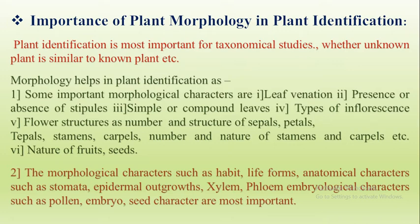The morphological characters such as habit — whether it is herb, shrub, under-tree, or tree — and life forms. Anatomical characters such as stomata type, type of epidermal outgrowths such as trichomes, and the type of xylem and phloem. Embryological characters such as cotyledon, embryo, seed characters, etc. — all these are most important for plant identification.